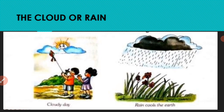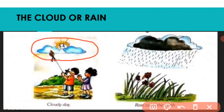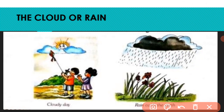You can see in this picture how a cloudy day looks — the sun plays hide and seek, and the weather is cool. On a rainy day the earth cools down. Rain at the right time is necessary for us and for our farmers. We will complete our chapter in the next video, so keep learning and stay tuned.